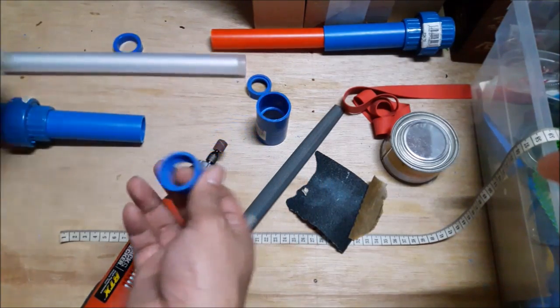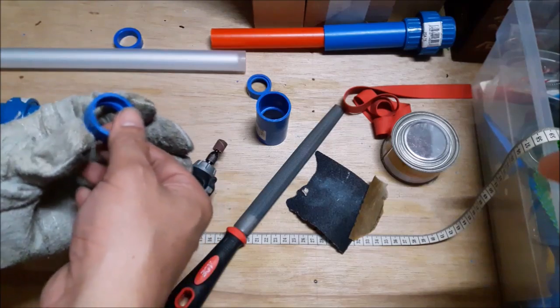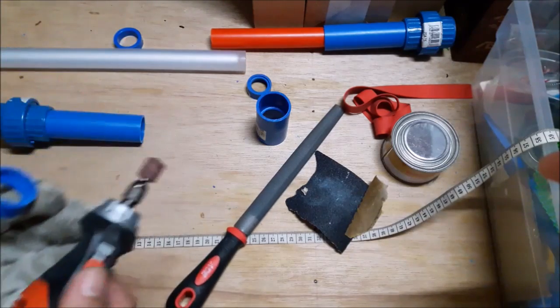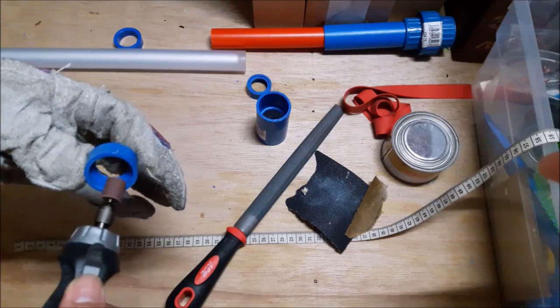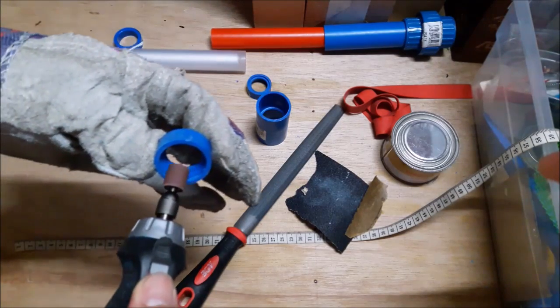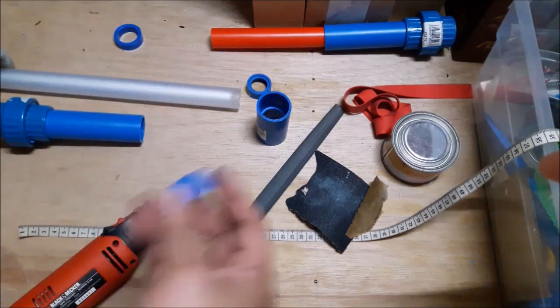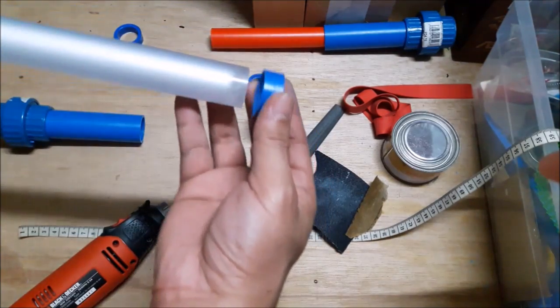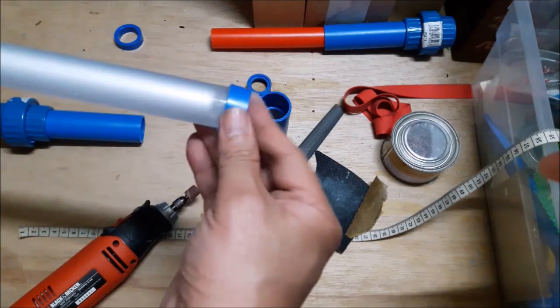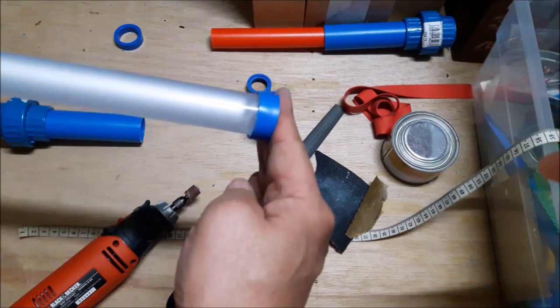Now as you can see, the end of the blade doesn't exactly fit into that PVC component. So we'll need to grind it a little bit. There you go. Once that's done, as you can see, the blade can now fit snugly inside that piece.